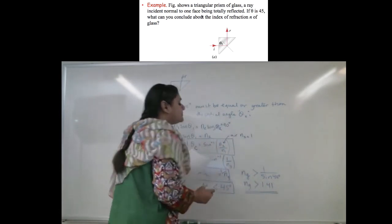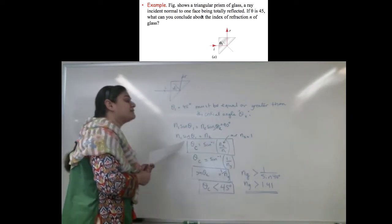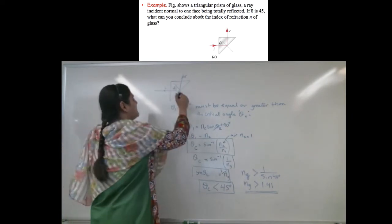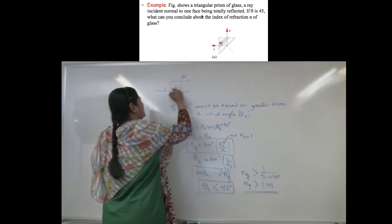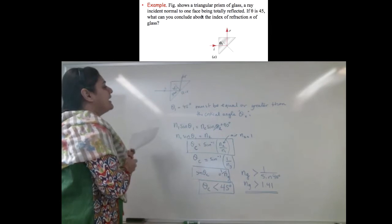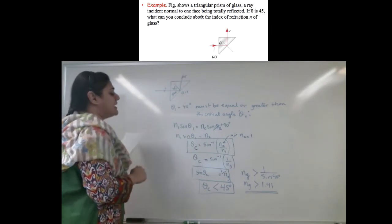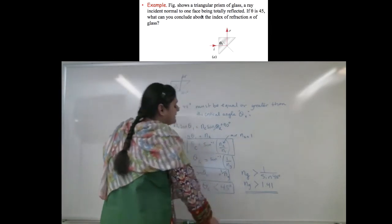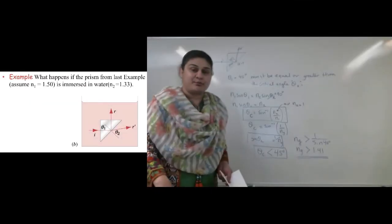If that was not true, then part of this ray will be refracted out into the air. This is the air, and this is the glass. Part of this ray will come out. And since that is not happening, I can guarantee that this holds true. Now, in the next example,